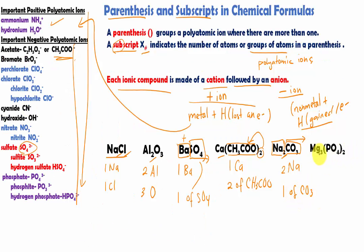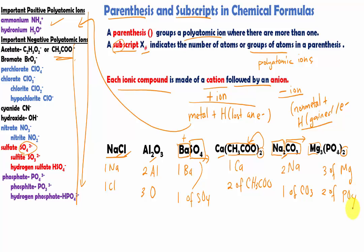Here's our last example: Mg₃(PO₄)₂. We know Mg is the cation — magnesium is in group 2A — so we have 3 Mg. Then we have the parenthesis around PO₄ with a subscript of 2. Parentheses are used to group polyatomic ions when there is more than one — in this case 2. So we have 2 of PO₄. That is how you interpret parentheses and subscripts in chemical formulas.